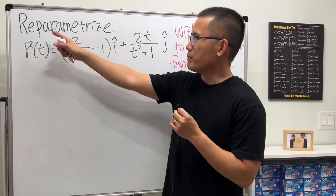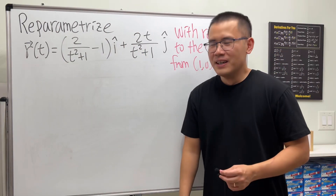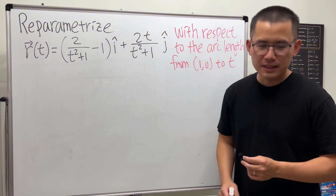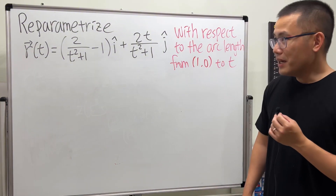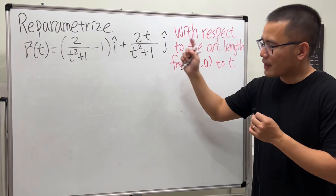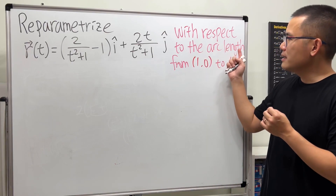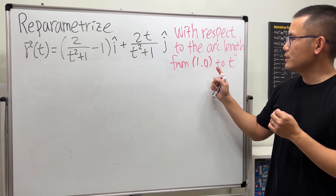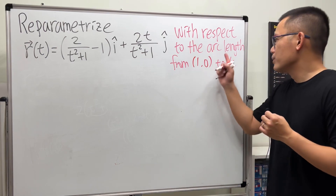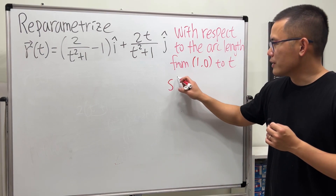Today let's see how we can re-parameterize. We are going to see how to re-parameterize this vector function r of t with respect to arc length from the point (1, 0) to t.